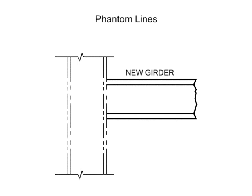The second way phantom lines are used is to illustrate the position of related parts to better show how the part interfaces with existing or missing parts.